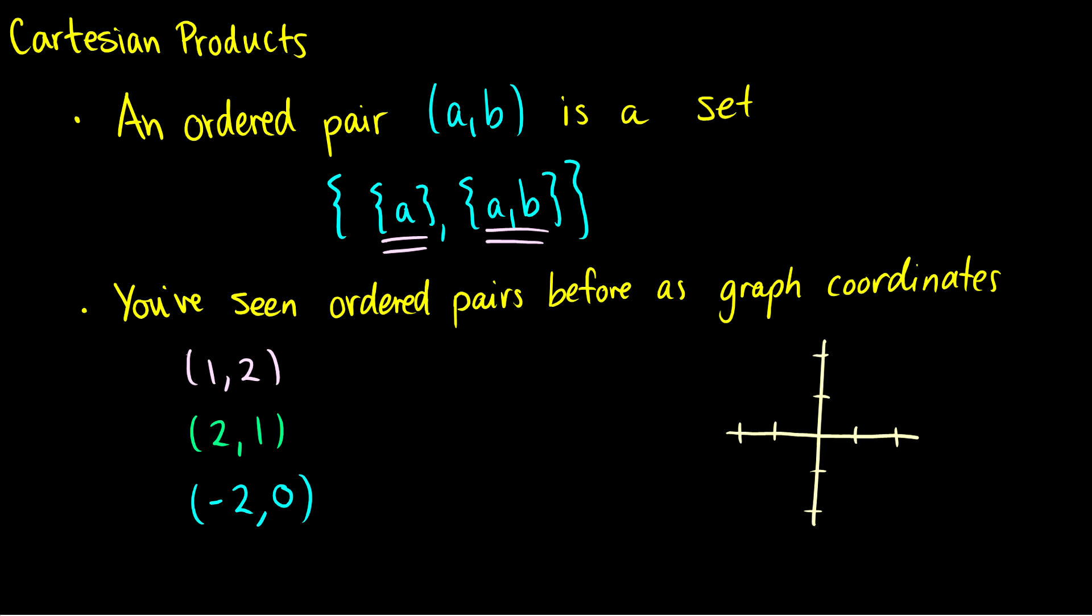Instead I want to focus on it as you've seen it before. So for instance we've seen this ordered pair notation when it comes to graphing in high school. The ordered pair (1,2) would mean one on the x-axis, two on the y-axis, and we have this point here.